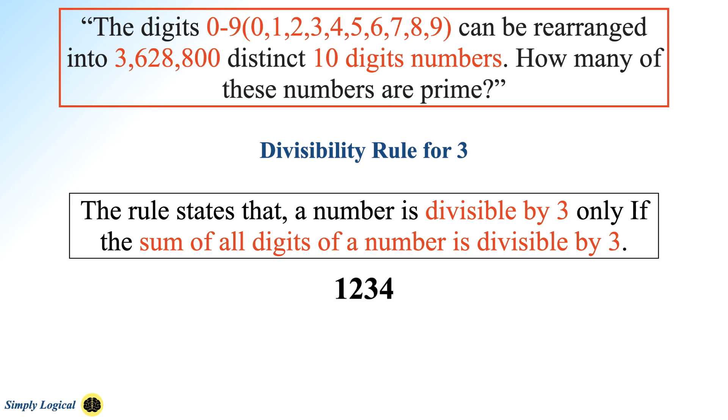Take another example, 1234, and this is not divisible by 3 because the sum of all the digits in the number 1234 is 10, which is not divisible by 3. This is an interesting rule. Regardless of the number of digits in a given number, this rule works.